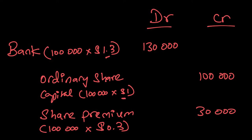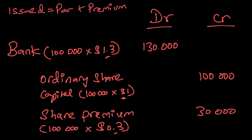You should note that the $1.30 is broken down into the par value — the original value — and the share premium. Always break up the value of your share into par value and share premium. The issued value will always be made up of par plus premium; the premium can be zero, but the issued value cannot go below par. Whenever we issue a share, record the value raised into bank, shares issued into ordinary share capital, and any premium into share premium.